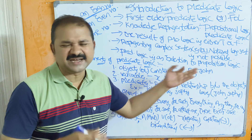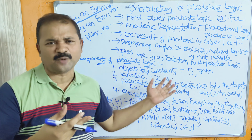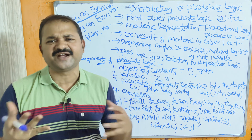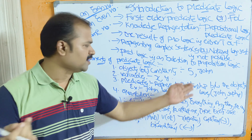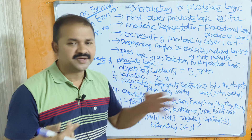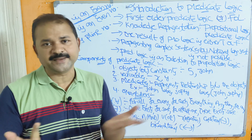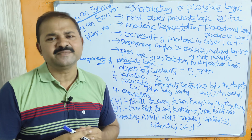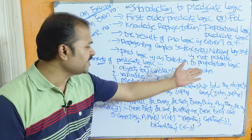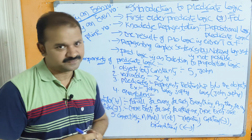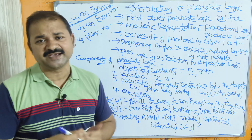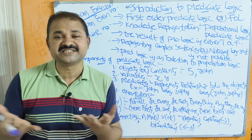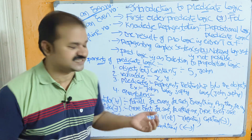The first component is objects, also called constants. Constants can be any number such as 5, 20, or 30, or a person's name like John, or any fruit name or any name. An object is a real-world entity that has some physical existence.